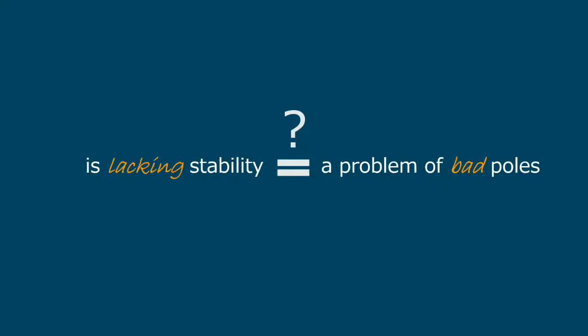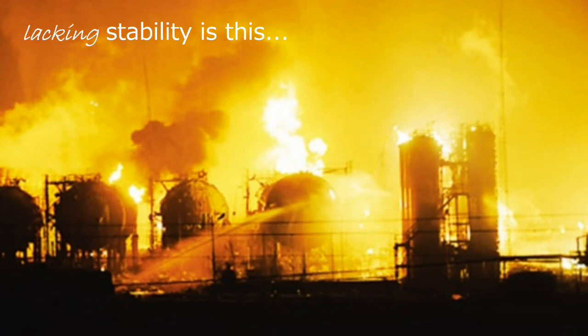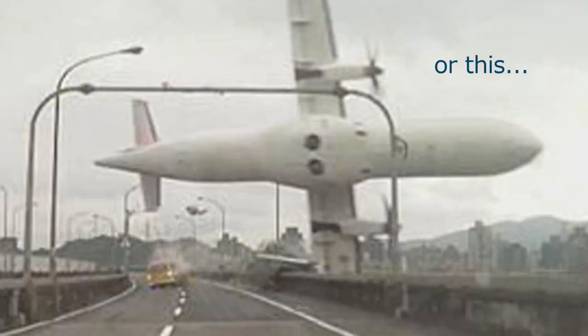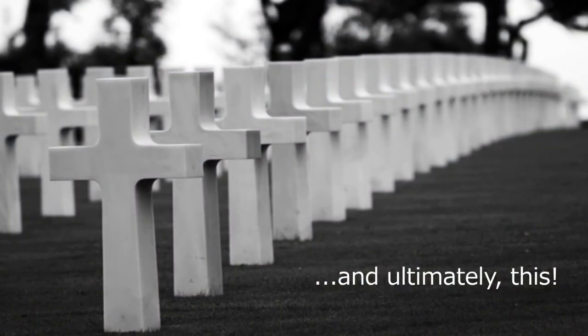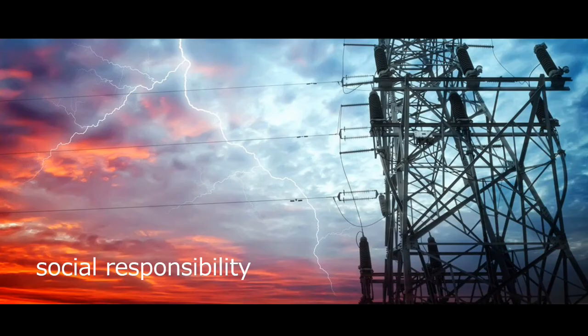At this point, it's important to call your social responsibility as engineers. Is lacking stability just a minor problem of having bad poles? Not exactly. Please be aware that lacking stability results in this, or this, or this, or ultimately this. Social responsibility engineering means to do an honest work not putting at risk the safety of people or infrastructures. You will have to make decisions, so do them wisely.